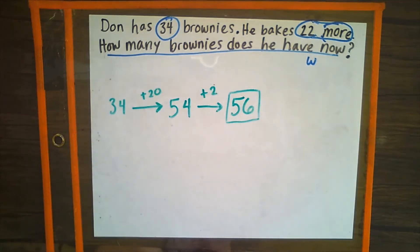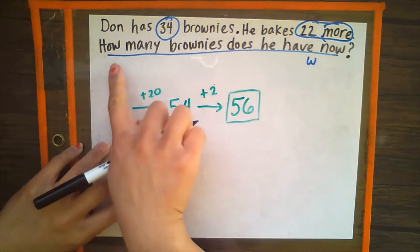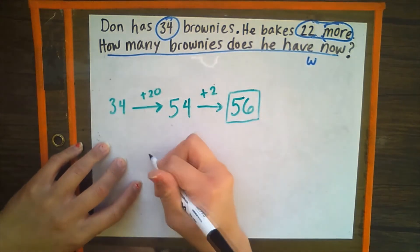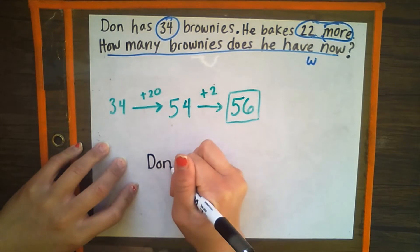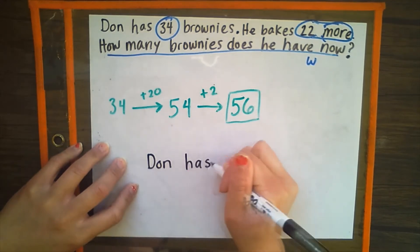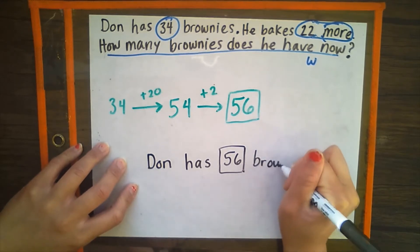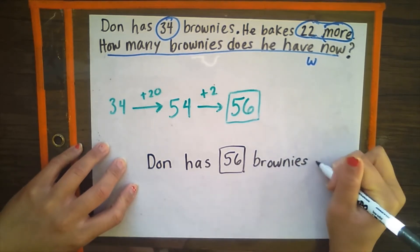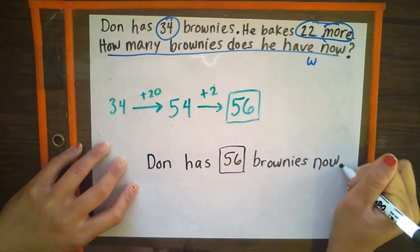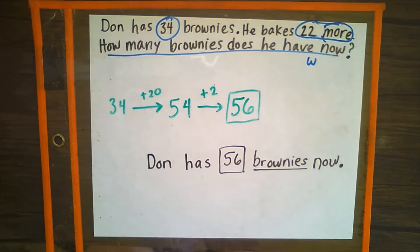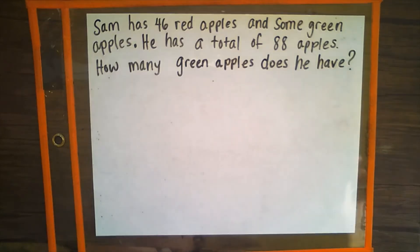Now we're going to go ahead and write that in a word sentence. Our question reads, how many brownies does he have now? We know who he is — he is Don. So, Don has 56 brownies now. Complete sentence with a period. Don't forget to also underline your unit, which is brownies in this word problem.